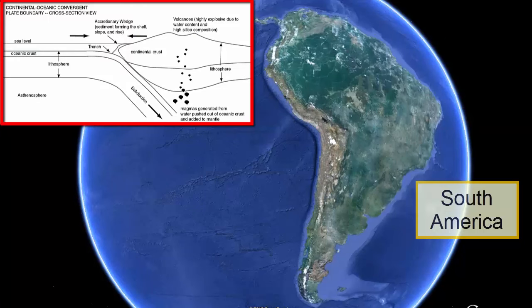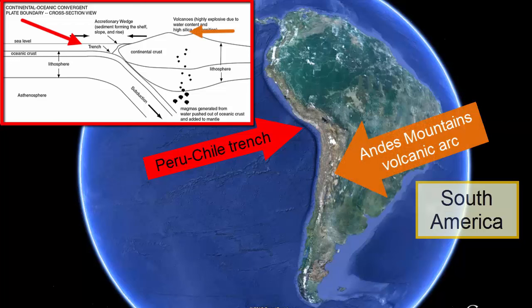For example, what do we see in South America that shows us subduction is going on? The dark blue arc-shaped deep trench on the sea floor forms as the plate subducts. What else? The volcanic arc, the chain of active volcanoes known as the Andes Mountains.